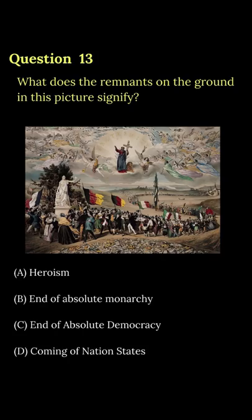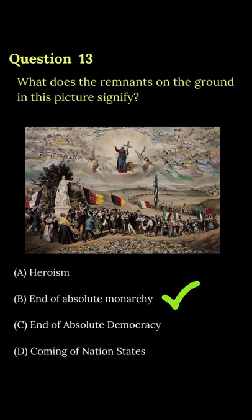Now let's look at question number 13. This photo is related to what you are seeing on the land. There are remnants of absolute monarchy — because of signs and crowns of the king — so option number B is the answer.